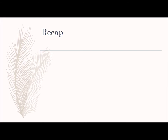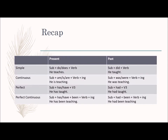Let's have a recap of what we learned about past tense and present tense. For simple present tense: subject plus do or does plus verb. When the subject is plural, use 'do'; when singular, use 'does'. For past tense, 'do' and 'does' change to 'did'. For present continuous: subject plus am/is/are plus verb plus -ing. For past continuous: subject plus was/were plus verb plus -ing.